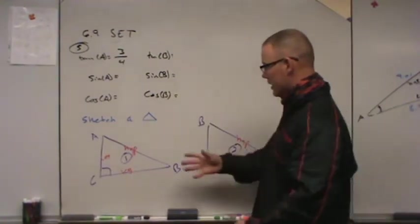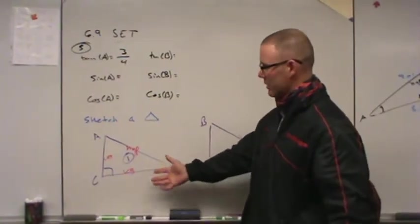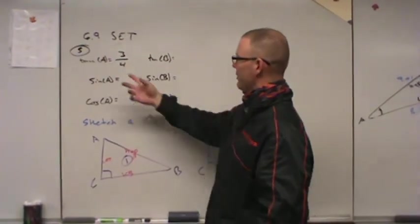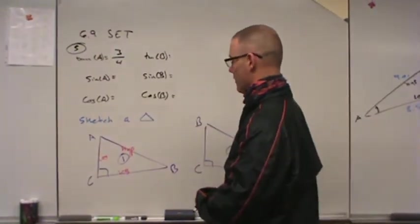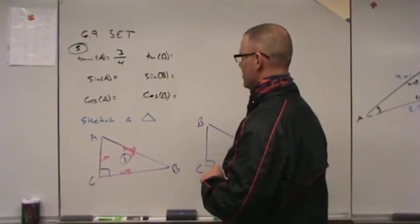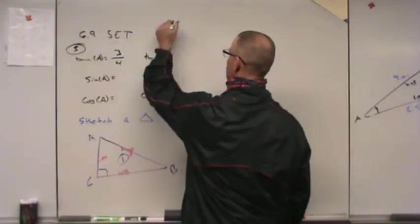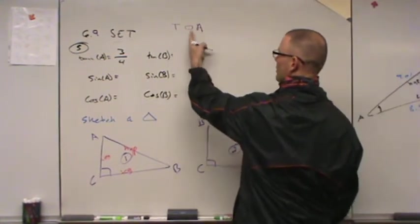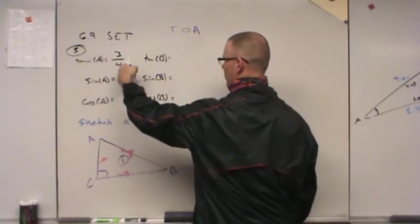Now, where do I get the lengths for my sides? I have to know lengths of sides to create the ratio. Well, if you look up in here, it tells you that the tangent of A is 3 over 4. All right. Well, if the tangent of A is 3 over 4, tangent is opposite over adjacent, leg opposite over leg adjacent.